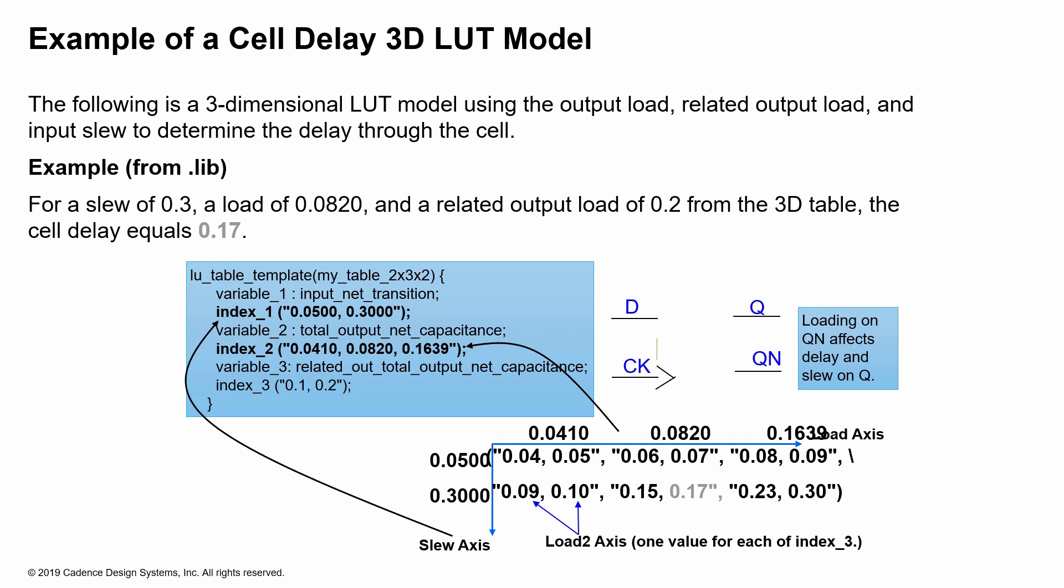And for this lookup table, the related output pin capacitance or net capacitance is used as two values. And so once you locate the slew and load, for the third one, we use the load 2 and thus calculate the delay based on load 2. And if the delay doesn't fall on any of these load points, then basically what the tool does is it interpolates the values. And that's coming up with the final number for your cell delay.